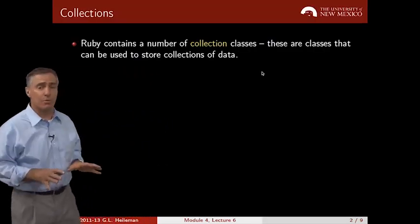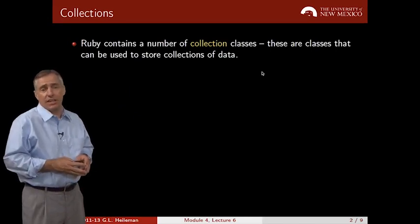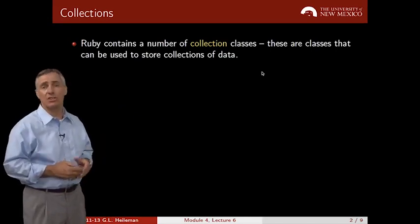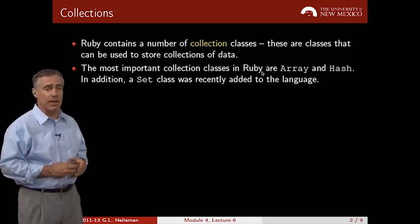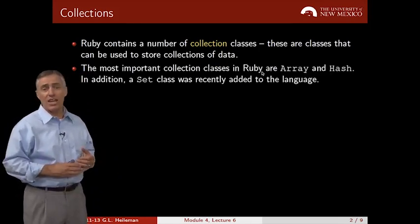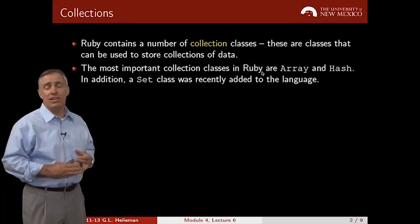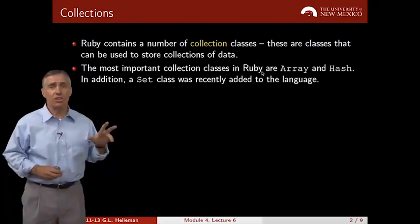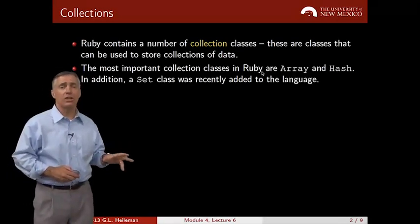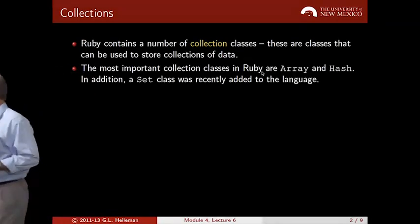Ruby contains a number of collection classes. These are classes that allow you to store collections of objects in one convenient place and refer to them. The most important of these are the array and hash classes. There's also a set class and a few others, like a range class, but we'll primarily see the array and hash classes used in our Rails applications.